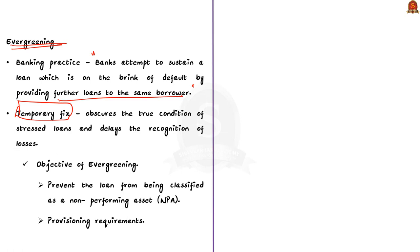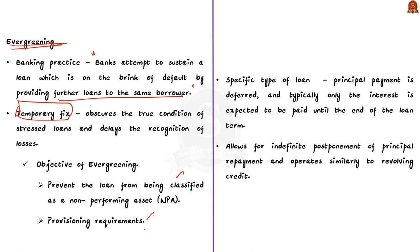The objective is to prevent the loans from being classified as non-performing assets and to minimize the impact on the profitability of the banks and provisioning requirements. It refers to a specific type of loan where the principal payment is deferred and typically only the interest is expected to be paid until the end of the loan term. This setup allows for the indefinite postponement of the principal and operates similar to revolving credit.